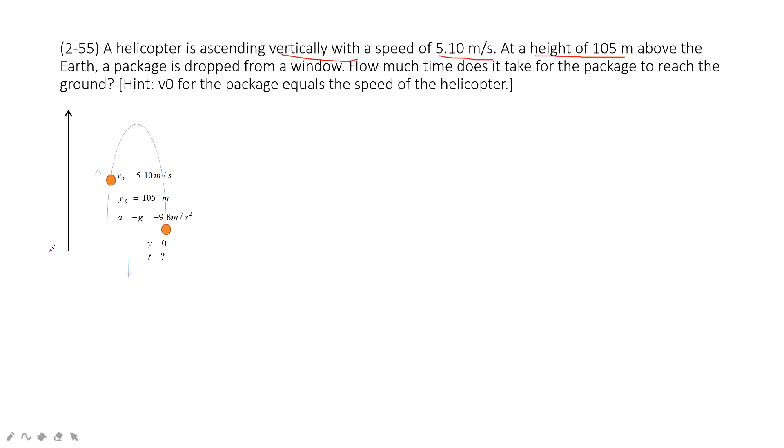So we choose the Earth as a reference point. A package is dropped from the window. There, so we consider at this position is initial position. The velocity is 5.1 m per second up, and then the position is 105 m.